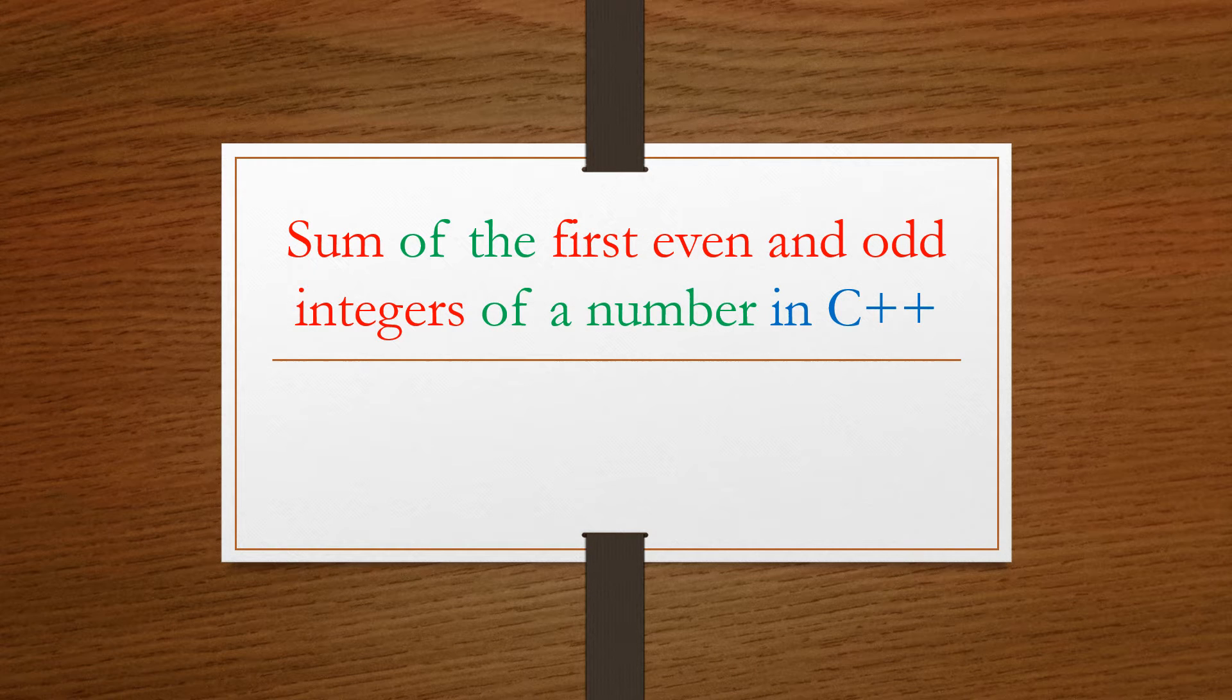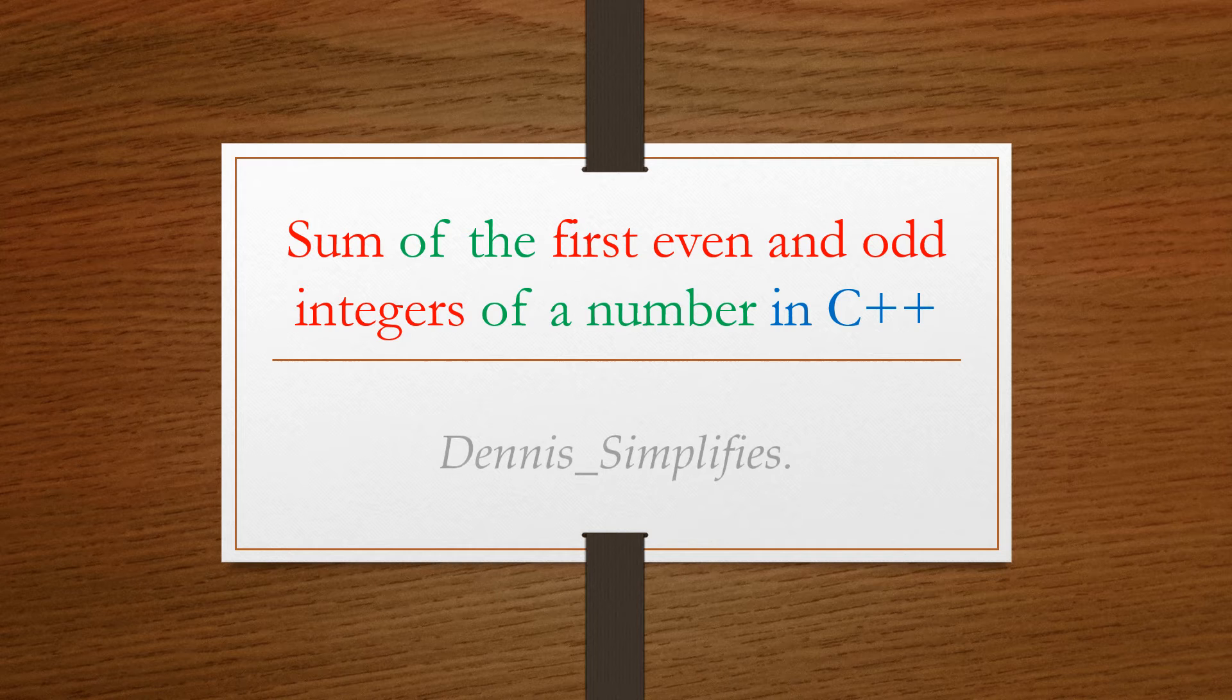What's going on friends, welcome to Dennis Simplifies. In this video we are going to compute the sum of the first even and odd integers of a number in C++. But as usual, the algorithm first and then the code. So let's simplify.